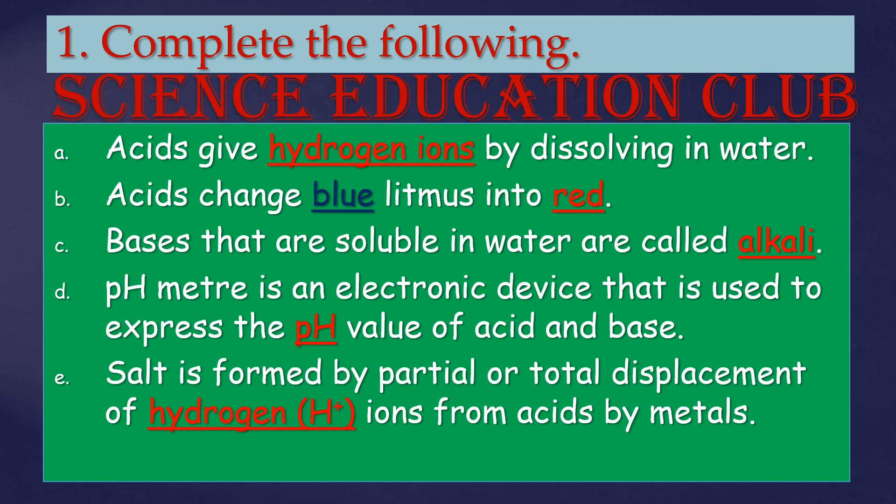Acids give hydrogen ions by dissolving in water. Acids change blue litmus paper into red. Bases that are soluble in water are called alkali. A pH meter is an electronic device used to express the pH value of acid and base. Salt is formed by partial or total displacement of hydrogen ions from acids by metals.